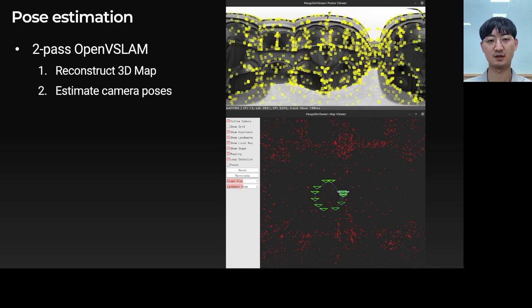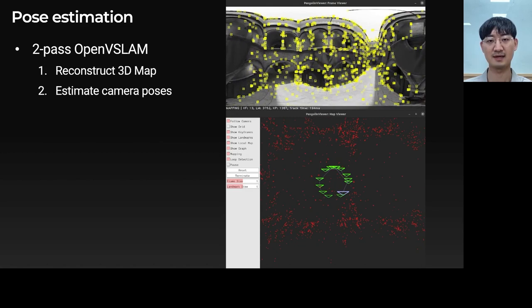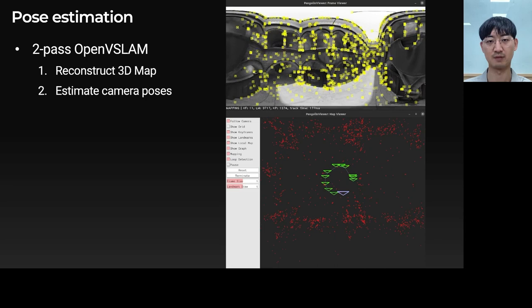For an input video, we first estimate the per-frame camera poses. For better pose accuracy, we estimate camera poses by running OpenVSLAM twice. In the first pass, we reconstruct and save a sparse 3D map. In the second pass, we estimate camera poses based on the 3D map.